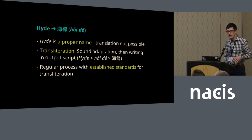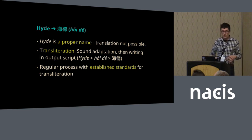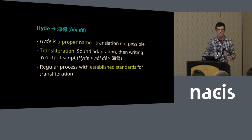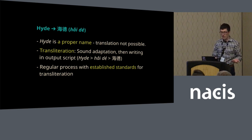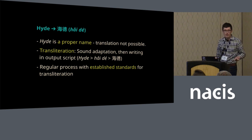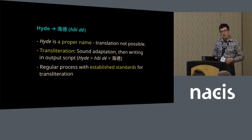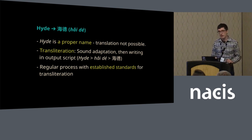Transliteration is a regular linguistic process that follows rules, and you can infer those rules based on data. And for converting English to Chinese place names, there are actually some established standards for doing that.